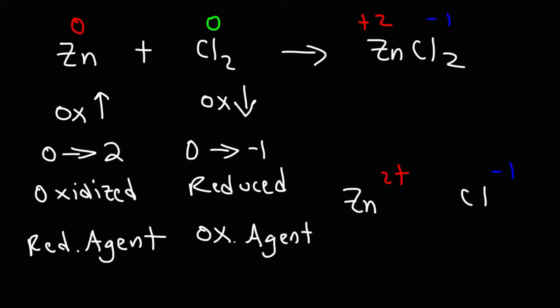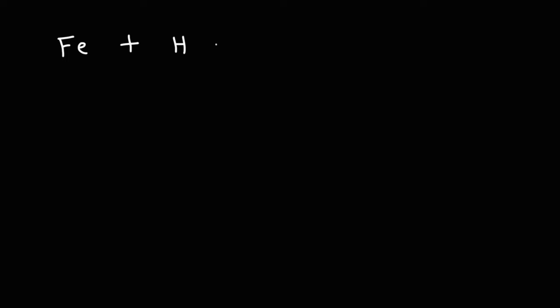That's a quick and simple way to find the reducing agent and the oxidizing agent in a chemical reaction. For more practice, let's work on some more examples. We have iron metal reacting with hydrochloric acid, producing iron(II) chloride and hydrogen gas. Feel free to pause the video and determine which substance is the oxidizing agent and which one is the reducing agent.